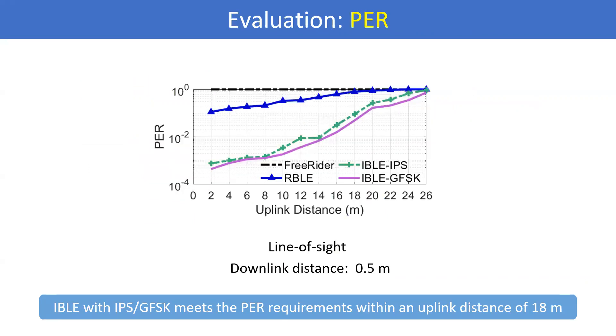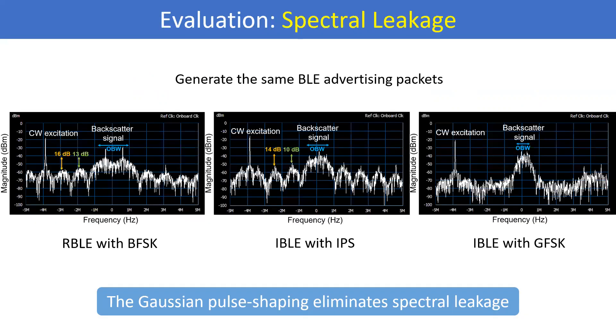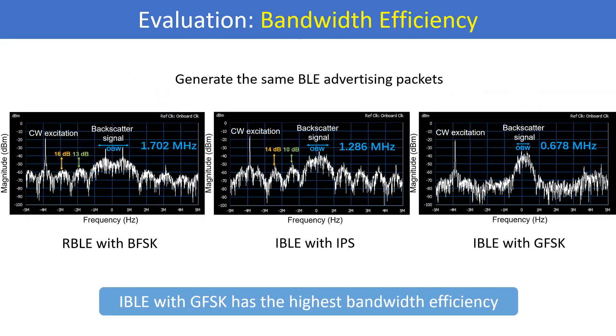Compared with RBL-E, our approach achieves much lower packet reception rates (PRs). The Gaussian shaping limits spectral leakage, and RBL-E with GFC achieves the highest bandwidth efficiency.